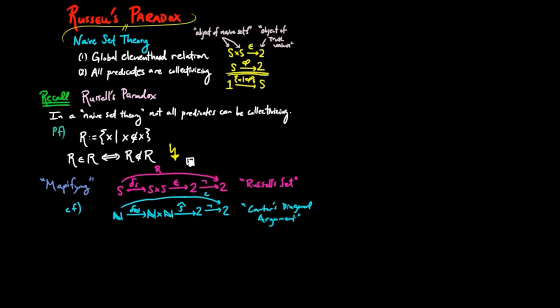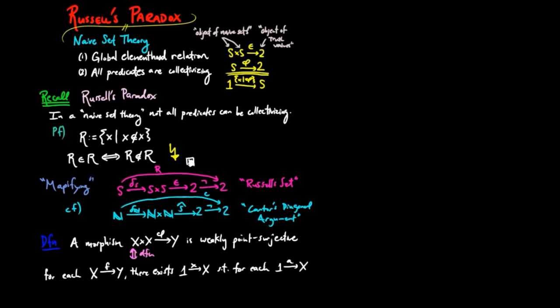Since we don't need the full structure of exponentials for this argument, we give another definition which is weaker than point surjectivity. We say a morphism phi from x by x to y is weakly point surjective, provided for each morphism f from x to y there exists a point little x in x such that for each point little a in x, phi evaluated on x a is equal to f of a. In other words the following diagram commutes.